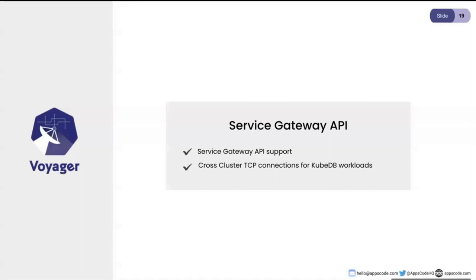The cross-cluster topics we're discussing will also be important in that respect. For example, if you're running all your databases in one cluster and want to access them from a different cluster — maybe even in the same region — how do you handle those TCP connections being exposed? This is especially relevant for on-prem setups, which quite a few of our big customers use. We want to make sure we have a clear-cut answer for all of them so they don't have to think about those things.